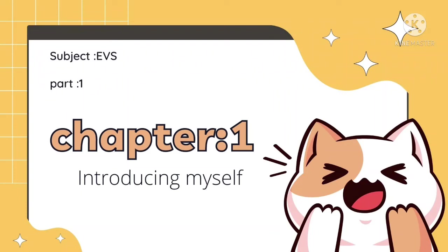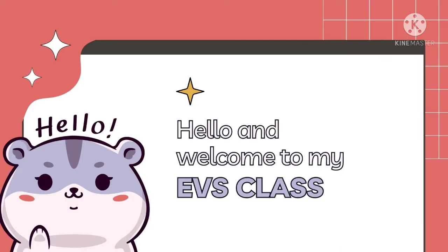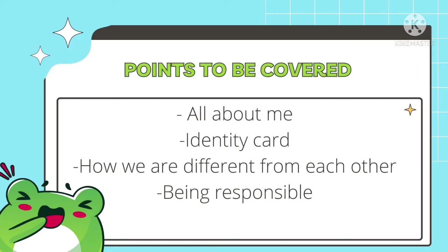Assalamualaikum and good morning to all the students! I hope you all are fine. Today we'll be starting with chapter number one: Introducing Myself, Part 1 of EBS. In this chapter we'll be covering four points: the first one is all about me, second is identity card, third is how we are different from each other, and the fourth one is being responsible.